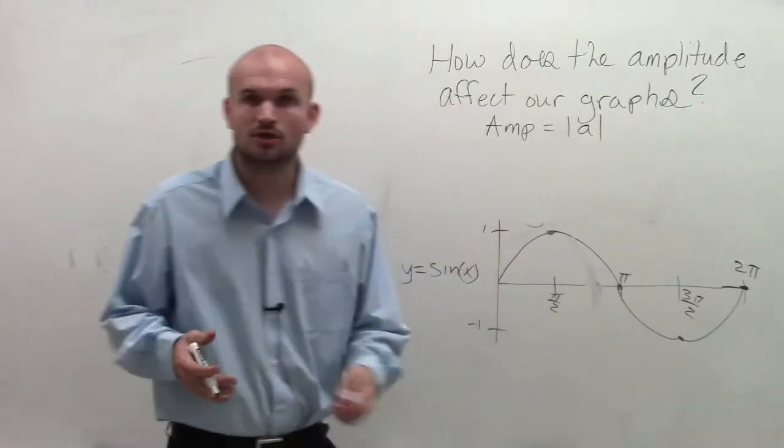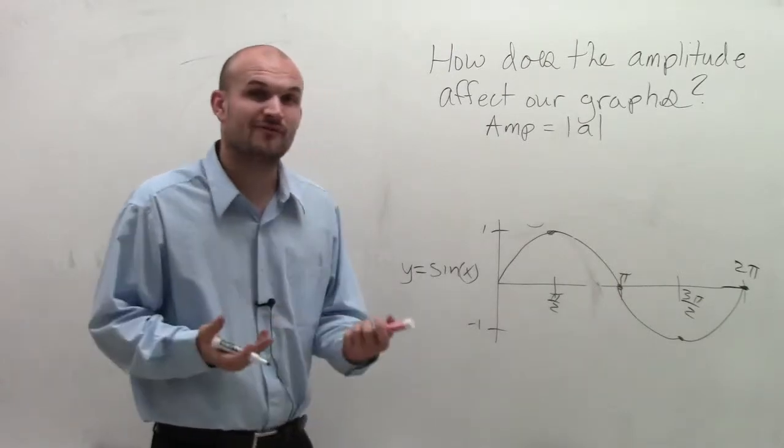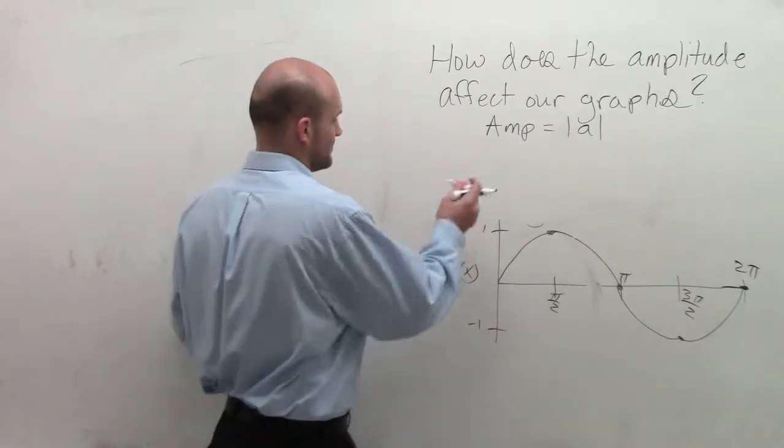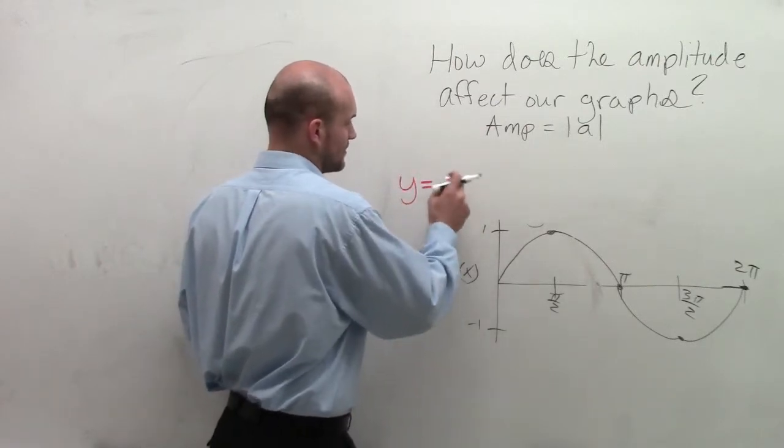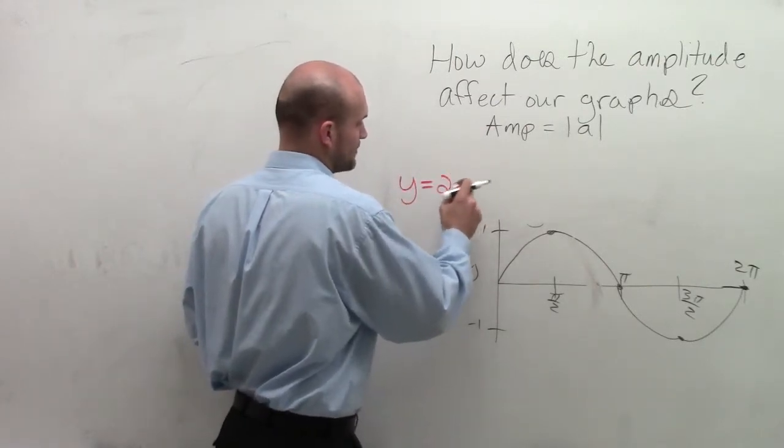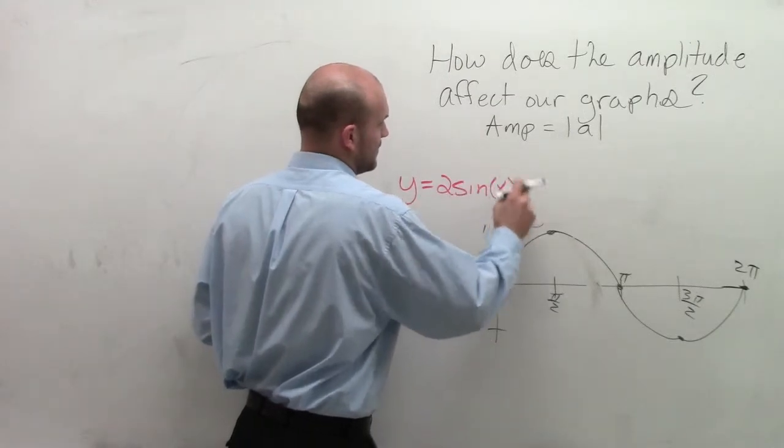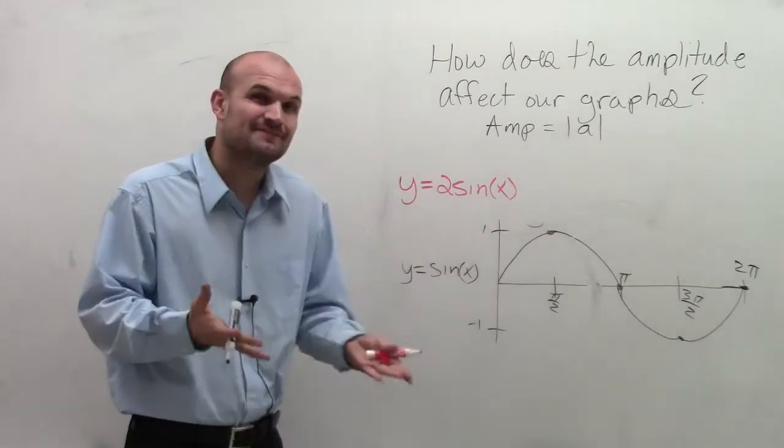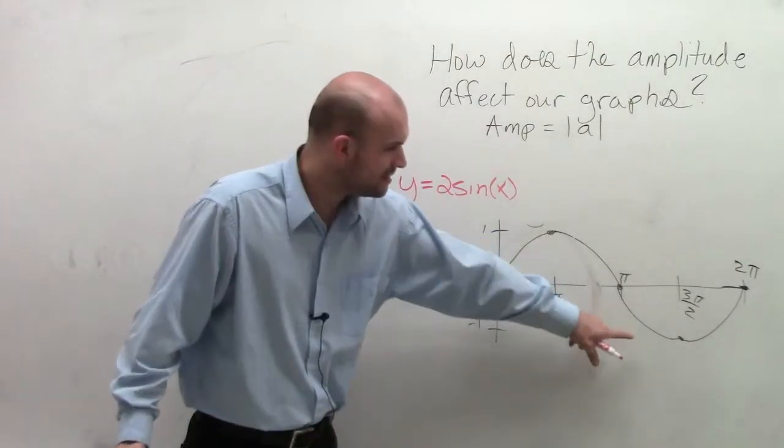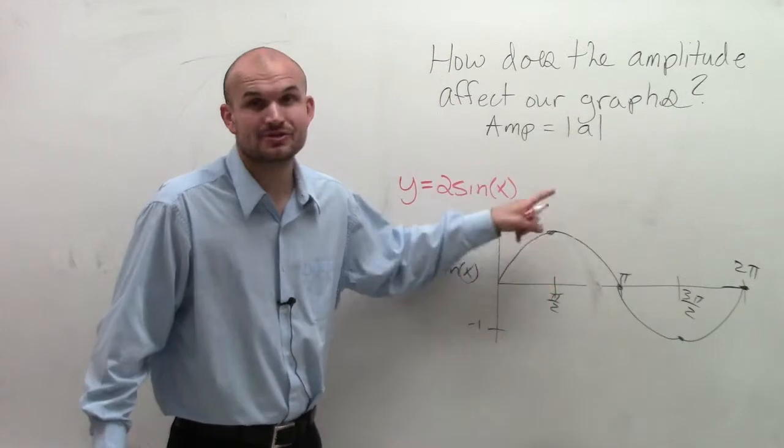So let's use a little color coordination here and take a look at a couple functions to see how they affect our graphs. The first function I'll do is y = 2sin(x). So what you can see is now my amplitude is 2. That means my half distance between the maximum and minimum, rather than being 1, is going to be 2.